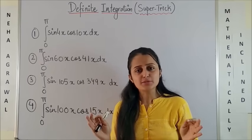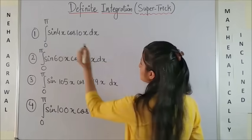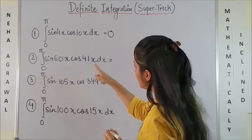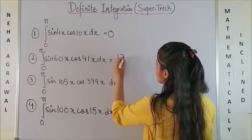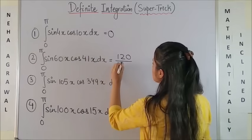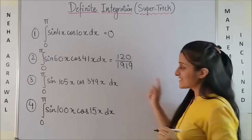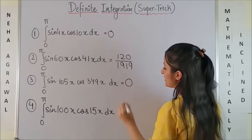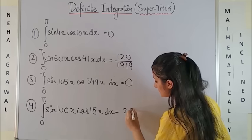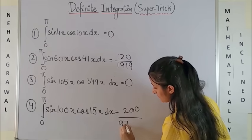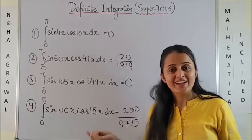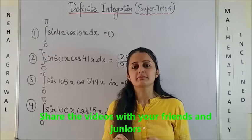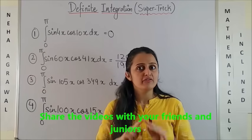Can you even think that you can solve these in three seconds? Trust me, at times it doesn't even take that much. The first one gives us a zero, the second one would give us this, the third would be a zero again, and the last one — that's it. No, I haven't mocked up the answers. Trust me, it is this simple.